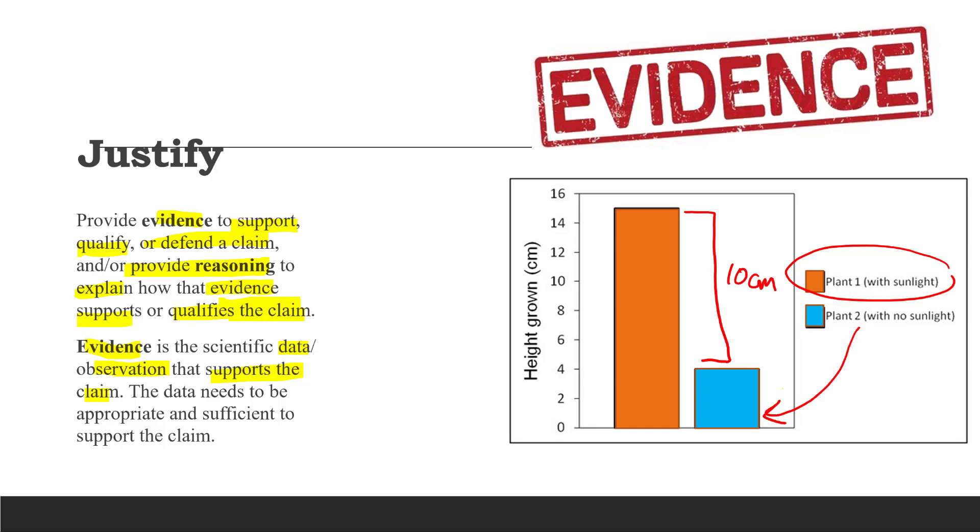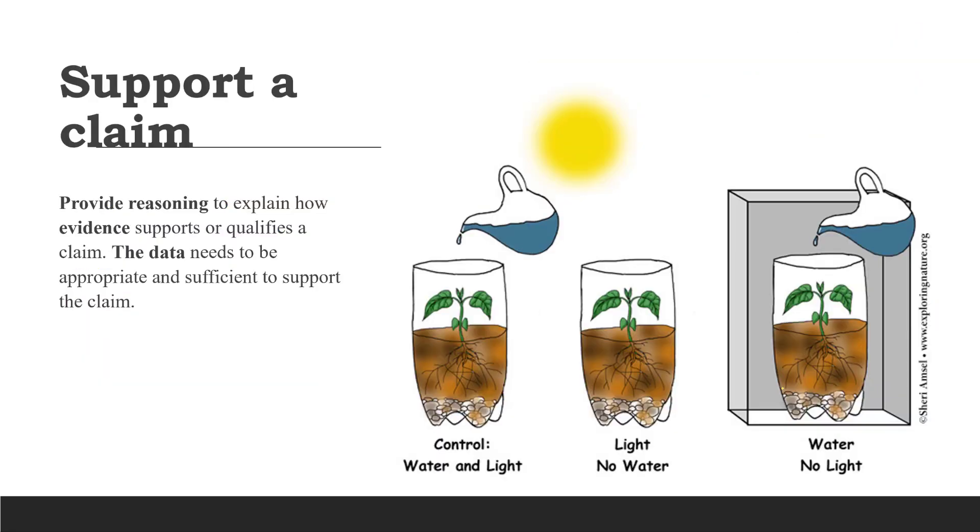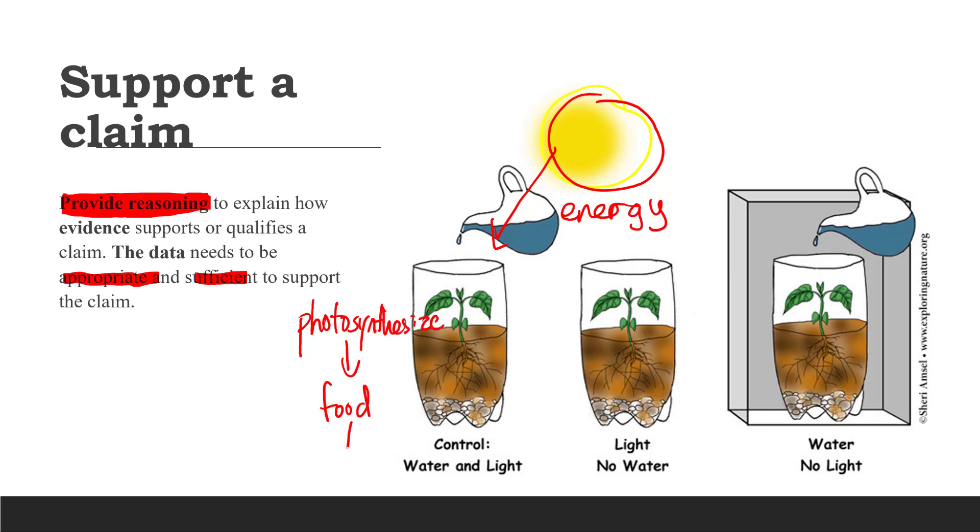That's the evidence right there. Then, we would need to provide reasoning to support the claim by explaining why the presence of sunlight can make the plant grow taller. The reasoning has to be based on the knowledge that we have learned before. And here is about photosynthesis. An appropriate reasoning is that sunlight can provide the source of energy for plants to photosynthesize and make food for growth and development.